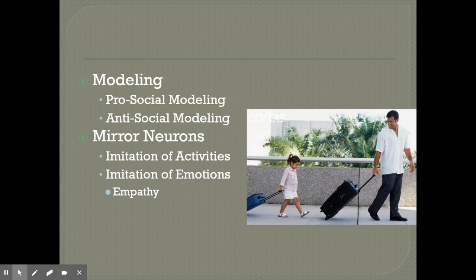Why does this happen? In our brain we have a collection of neurons called mirror neurons. Mirror neurons essentially allow us to recreate activities we witness — creating a virtual simulation of that activity in our head — which allows us to imitate activities we see other people doing. When we watch somebody dribble a basketball, we can imagine ourselves dribbling a basketball with the help of mirror neurons.